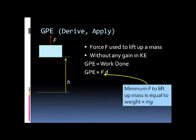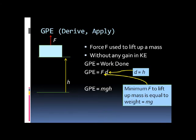If there is no gain in kinetic energy, the upward force must equal the downward force, meaning no change in velocity. The minimum force required to lift the mass equals its weight, where F equals mg. The distance d is the height h as shown in the diagram. Therefore, the gravitational potential energy equals mgh. Remember this equation and also how the derivation is done.